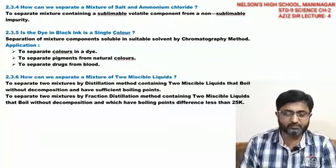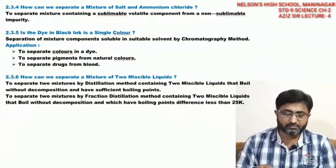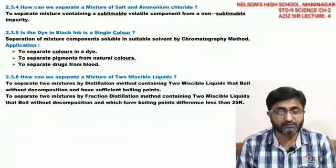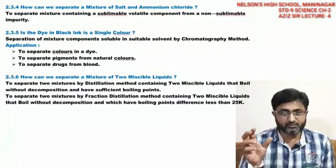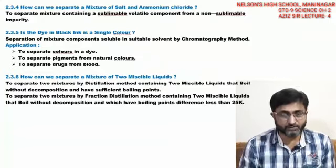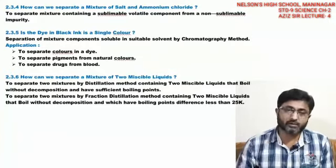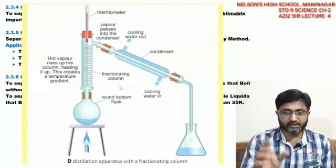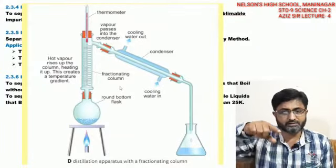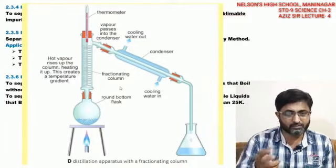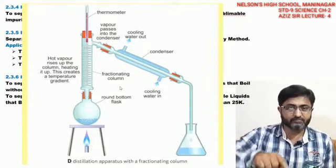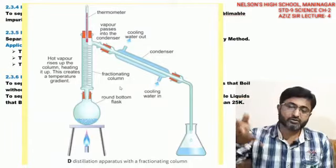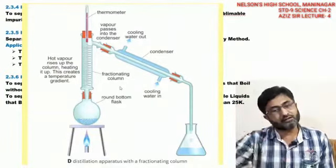In the fractional distillation method, the process is slightly different because the surface area — that is, the length of the tower — is increased. This is needed when the two miscible liquids have a boiling point difference of less than 25 degrees Celsius. If the difference is less than 25, you cannot separate them by simple distillation, so you use a fractional distillation tower, where greater length increases separation efficiency. One gas has enough energy to travel to the top while the other condenses back down the tower.